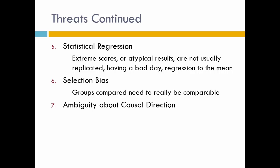Number six is selection bias. The groups you're comparing need to be comparable. If one group gets an intervention and another doesn't, they need to be the same ages, similar races, similar genders, and share other important characteristics. If they're not similar, you might have selection bias, and that would be a threat — if there's something unique about your group, we can't really say what works for one will work for the other.